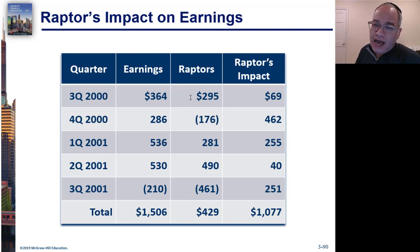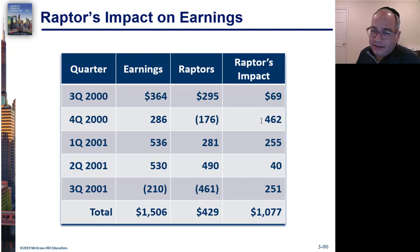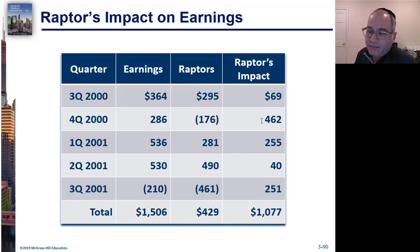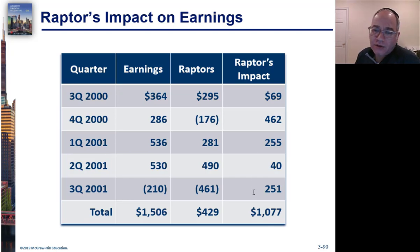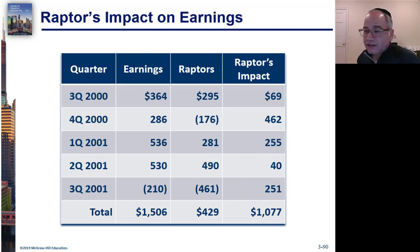Here you can see the Raptors' income and their impact on earnings. Initially, the Raptors were helping earnings, but there was a mess-up in the fourth quarter of 2000. Enron covered for that by creating more SPEs, which pretty much covered up the problem. But by the third quarter of 2001, Enron's stock started to drop and they were running out of ways to cover their guarantees.